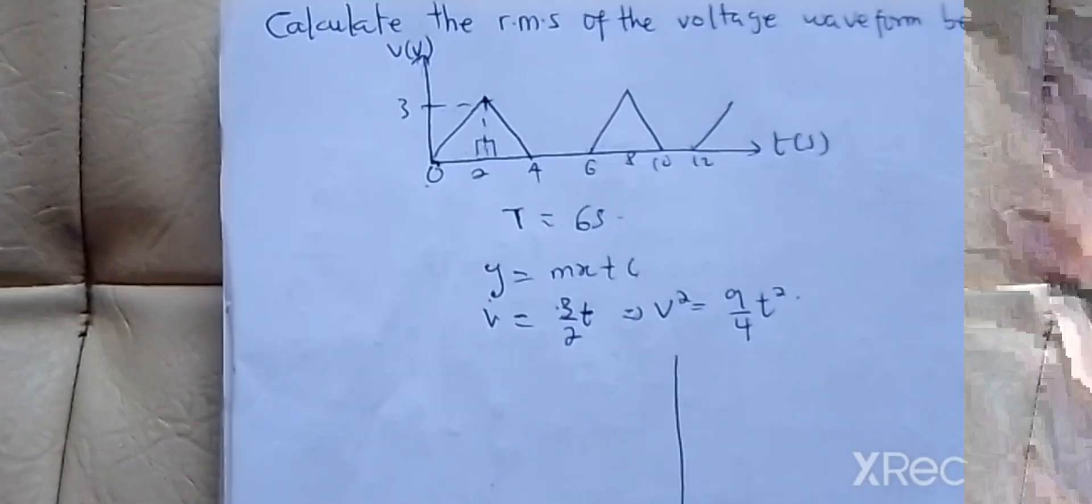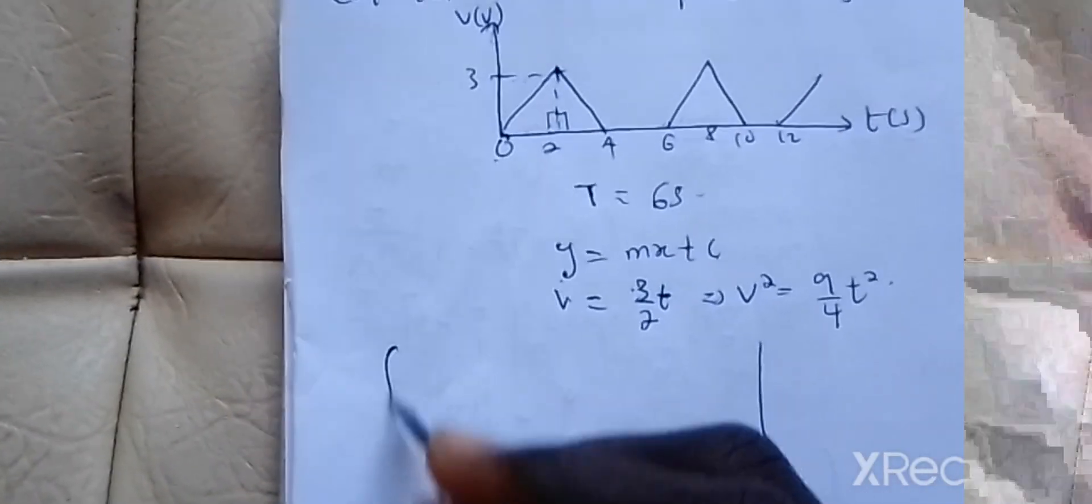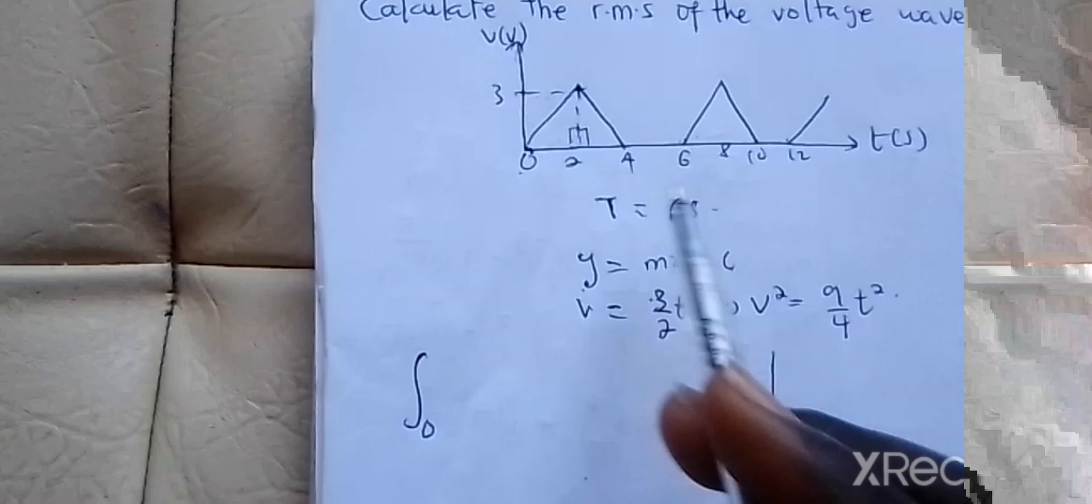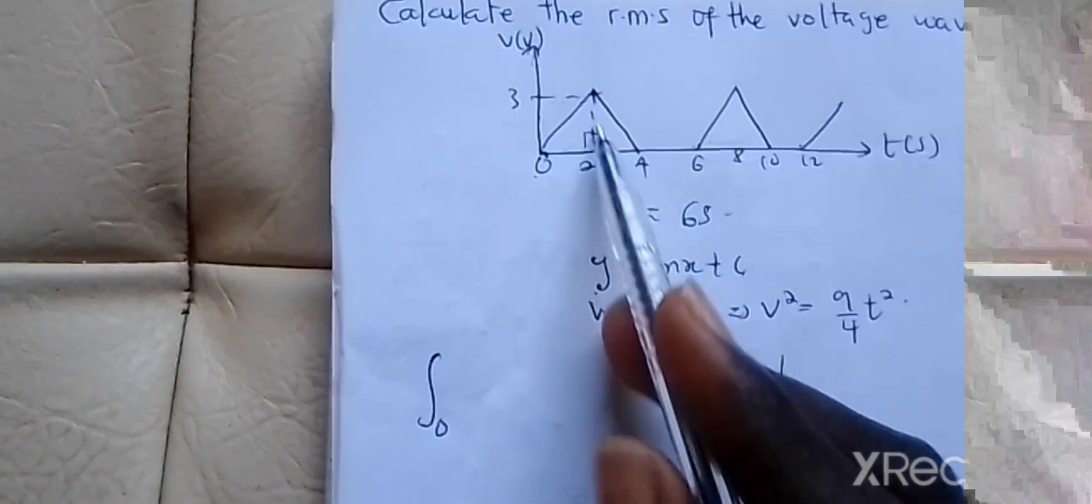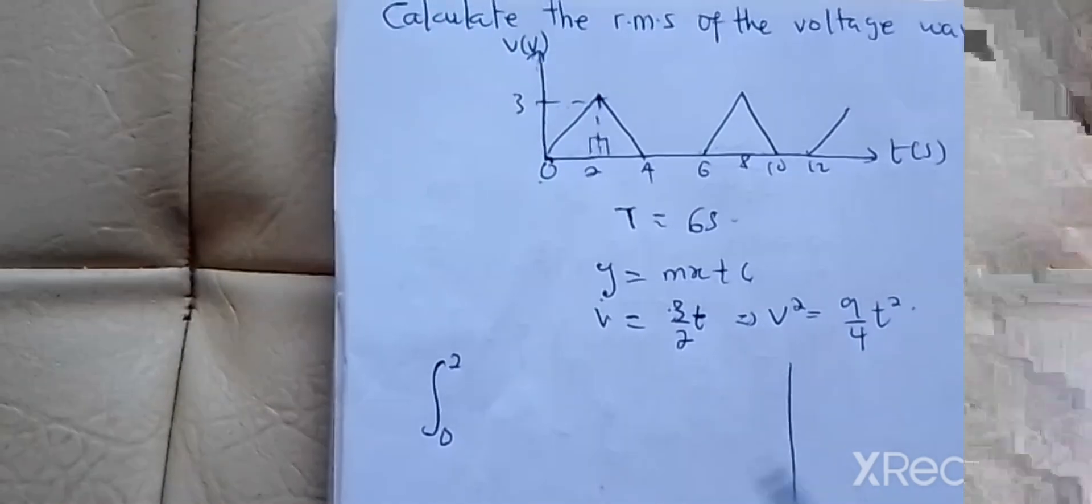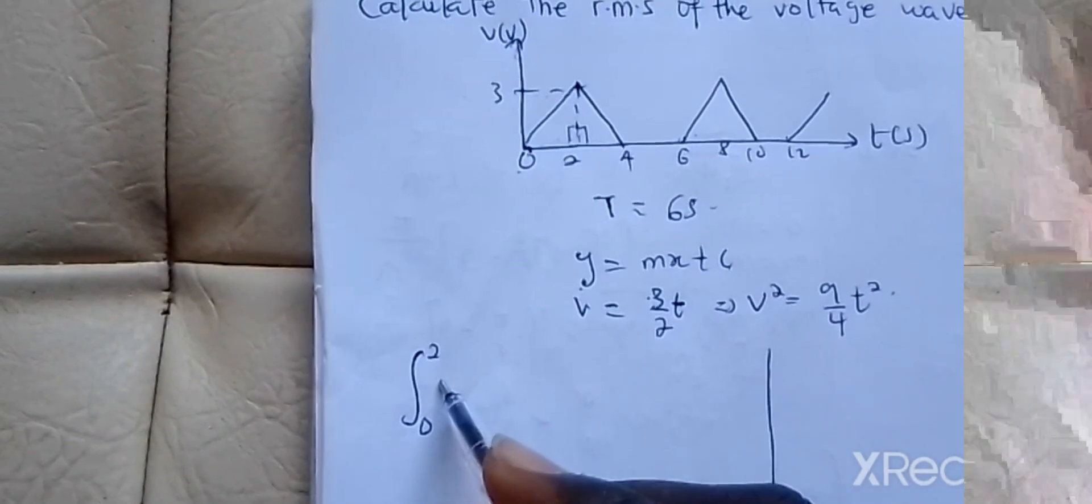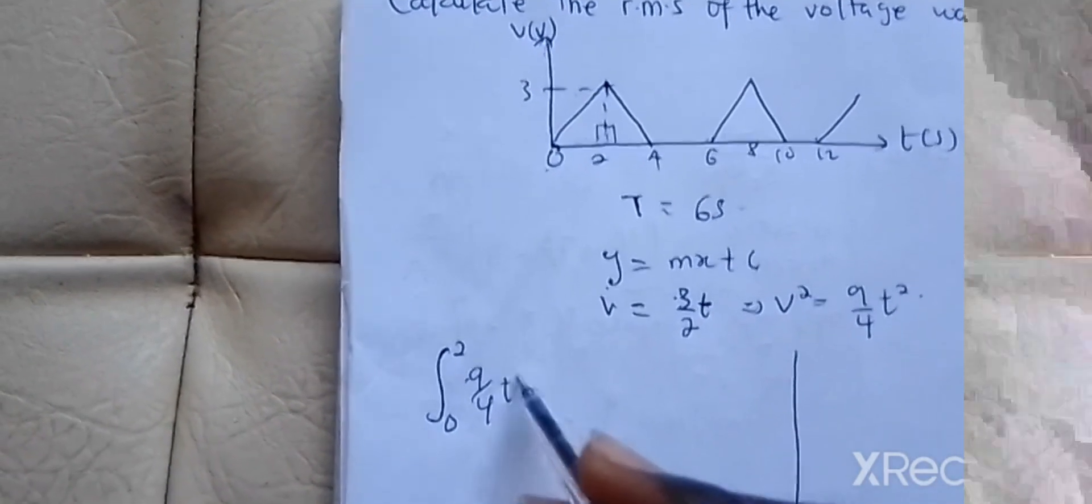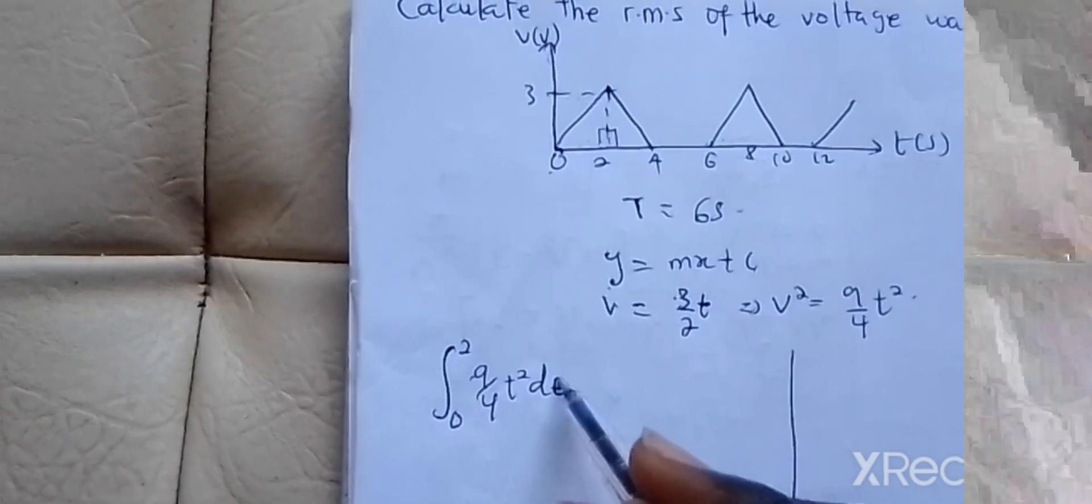You move further to integrate. Let's do a simple integration here. Integral from 0 to 2, considering the right angle triangle, of the squared waveform 9 over 4 T squared dT.